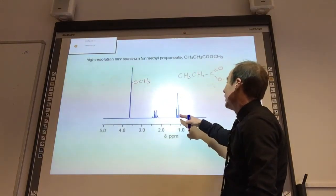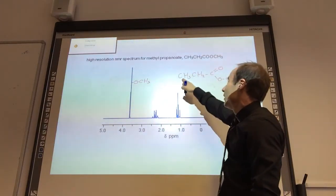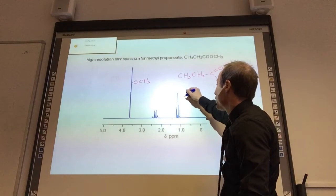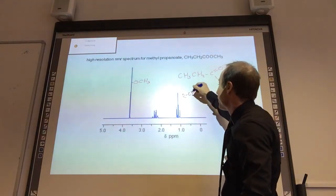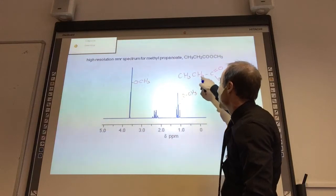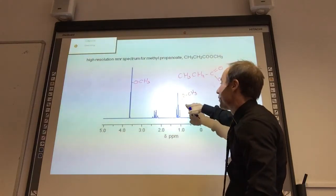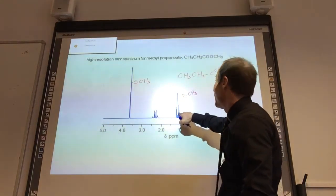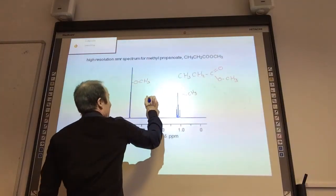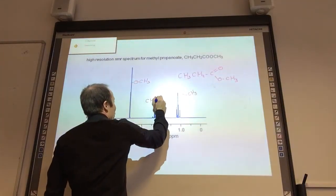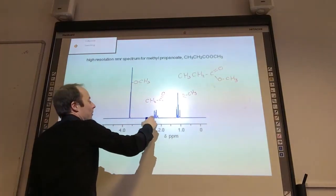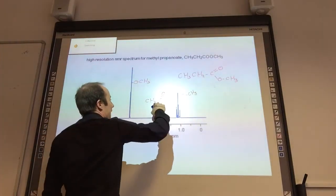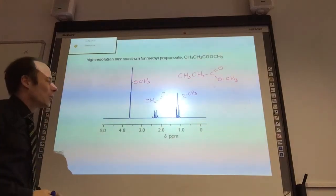What about this boy here? Well, he's a triplet, so he must be that CH3. So he's going to be our CH3 there because he's got two neighbors and is then split into a triplet, which leaves this boy being CH2C=O because he has got three neighbors and is split into a quartet.